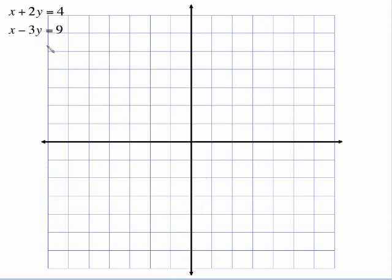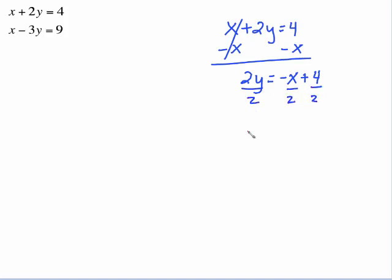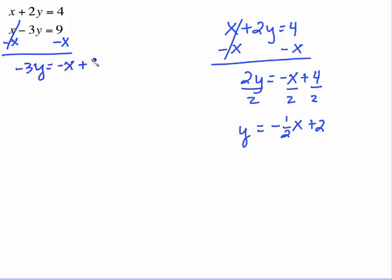Now the first two were already in slope-intercept form — they were easy to graph. These two are not in that form, so you need to put these in the right form. For the top equation, start by subtracting x from both sides, giving 2y equals negative x plus 4. Divide everything by 2, giving y equals negative one-half x plus 2. For the second equation, subtract x from both sides to get negative 3y equals negative x plus 9. Divide everything by negative 3, giving y equals one-third x minus 3. So these are the two equations that I'm going to graph on the next screen.